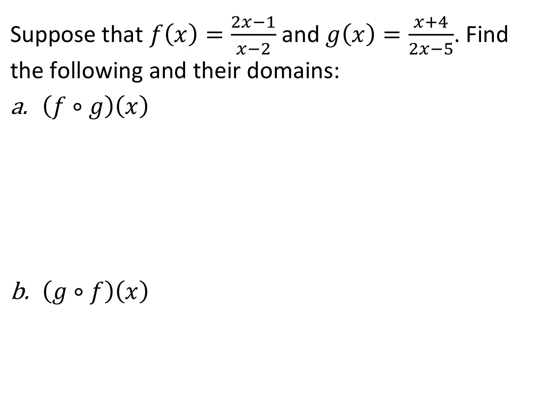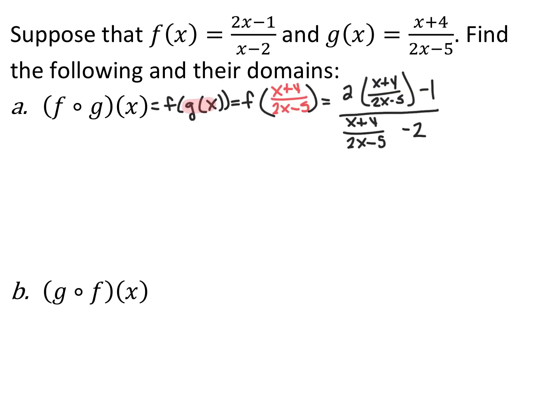Now we have two rational functions: f of x equals 2x minus 1 over x minus 2, and g of x equals x plus 4 over 2x minus 5. We want to find the following composites and their domains. For f composed with g of x, every time we see an x in f of x, we replace it with the entire function g of x — that is, x plus 4 over 2x minus 5. So the numerator becomes 2 times the quantity x plus 4 over 2x minus 5, minus 1, and the denominator is x plus 4 over 2x minus 5, minus 2.